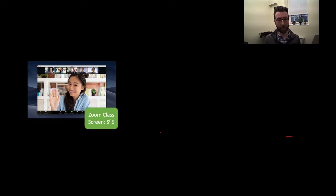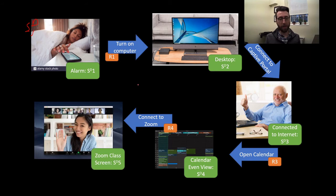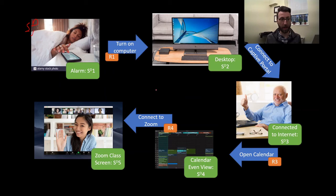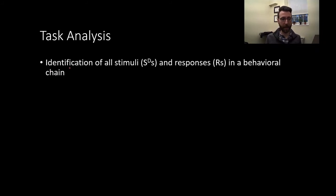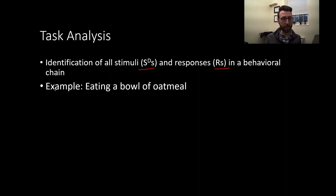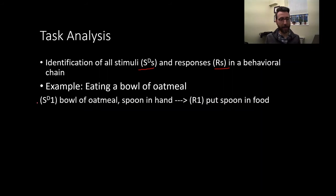Conversely, if you're very familiar with this process and know a lot about computers, I might be able to just give you the instruction: your alarm's gone off, connect to the Zoom call — and you might not need all these individual steps. For you, it might just be one fairly complex behavior rather than a chain of four or five smaller, more simple behaviors. What we've just done is called task analysis — the identification of all discriminative stimuli and responses in a behavioral chain. For example, if we were to do a task analysis on eating a bowl of oatmeal, our first discriminative stimulus might be a bowl of oatmeal with a spoon in your hand.